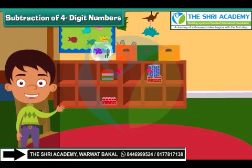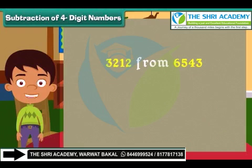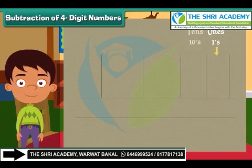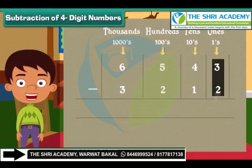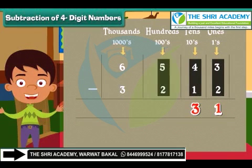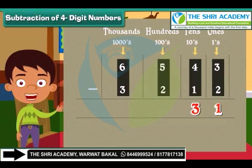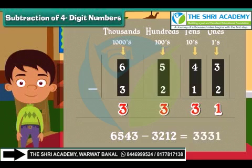Subtraction of four-digit numbers. Friends, Ben has now moved to solve subtraction. Let us subtract 3212 from 6543. Write the numbers in the respective columns. We start subtraction from the ones column: 3 minus 2 is equal to 1. Subtract the tens: 4 minus 1 is equal to 3. Similarly, subtract hundreds and thousands: 5 minus 2 is 3 and 6 minus 3 is 3. So 6543 minus 3212 is 3331.